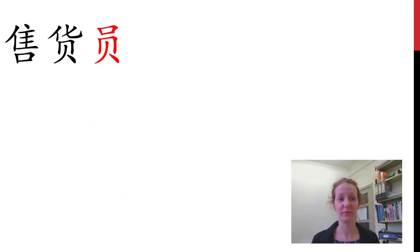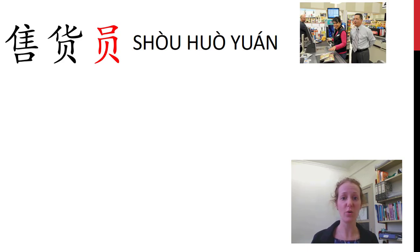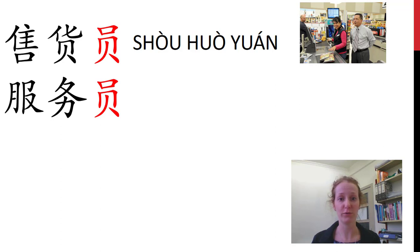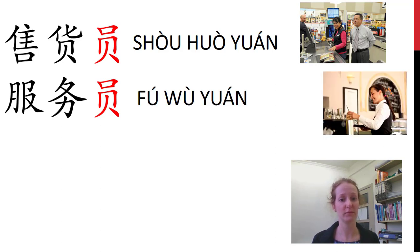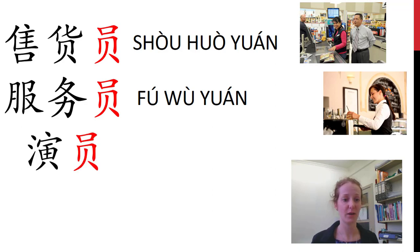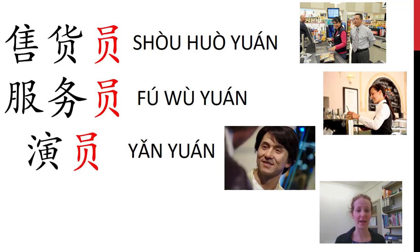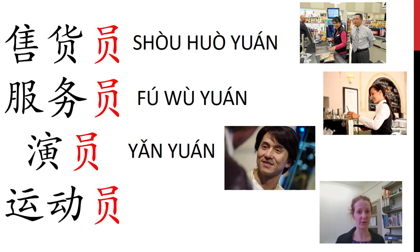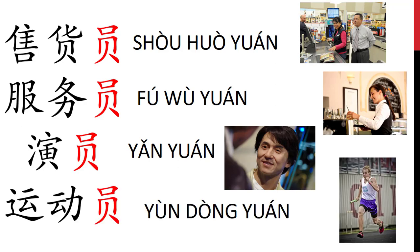这是什么? Look out for the 员. 售货员 — a retail assistant. 服务员 — a waiter or waitress. 演员 — an actor or actress. 运动员 — an athlete. This 员 means like a member or someone that does something, so it's a really good one to look out for when you're thinking about occupations.